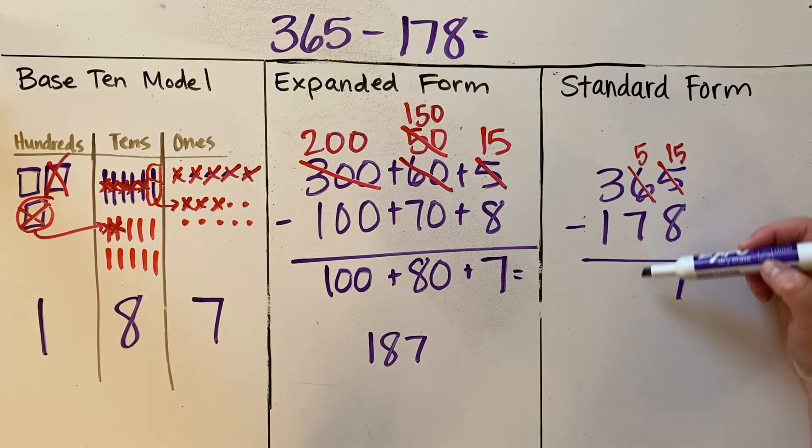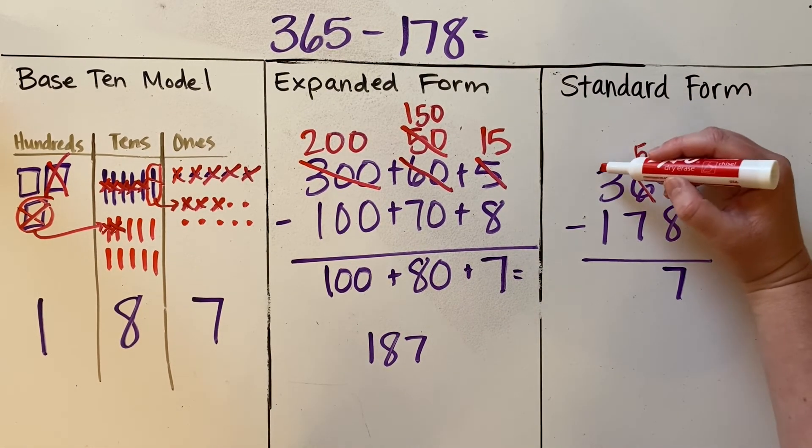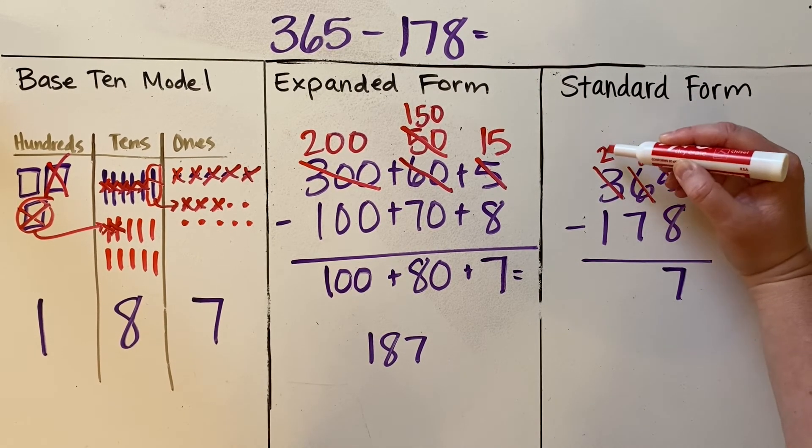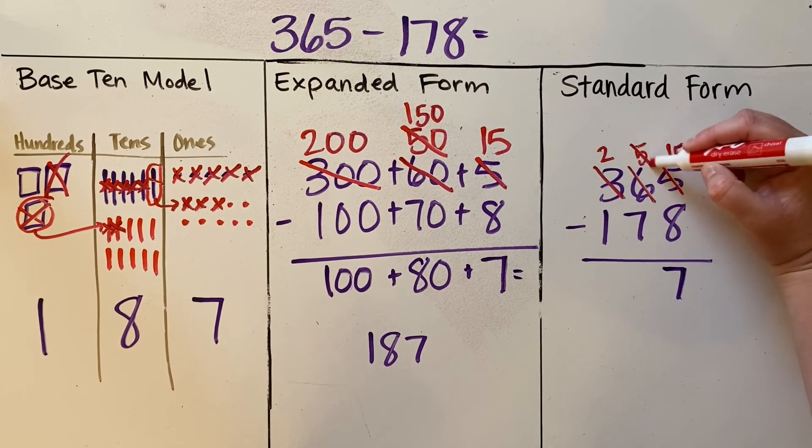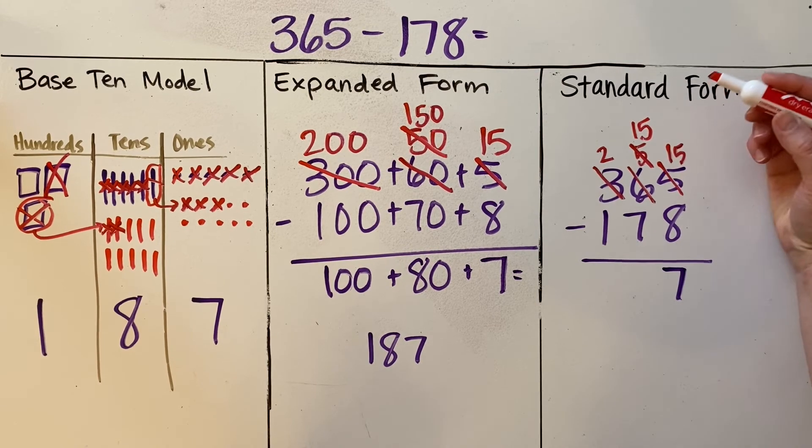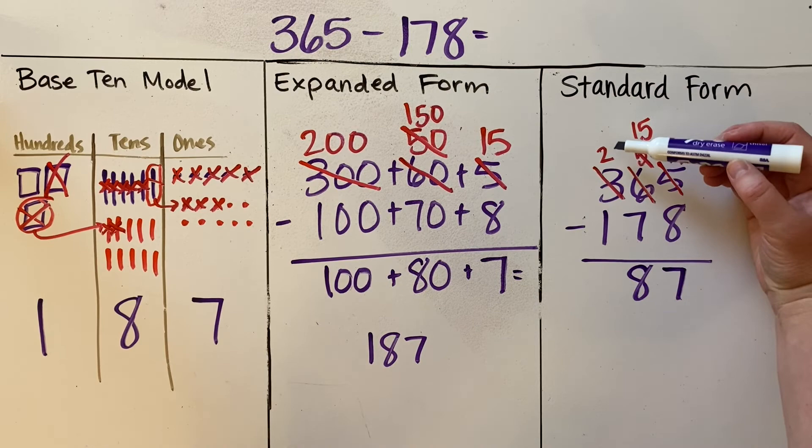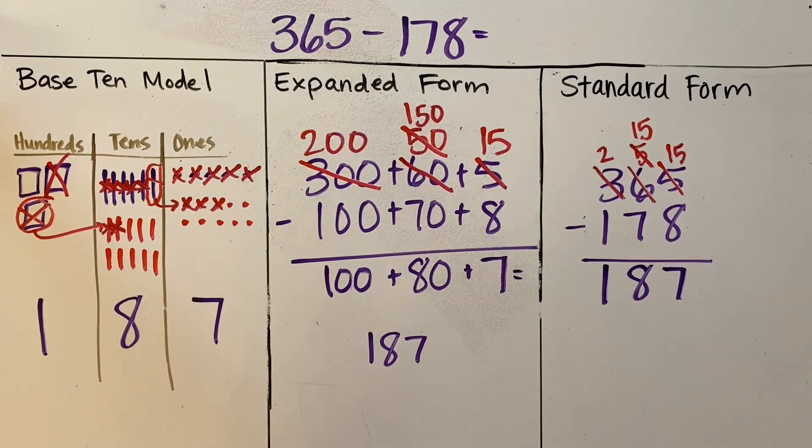Then I look into the tens column, and I'm doing five minus seven. But again, I can't do it, so I need to decompose 100. Instead of 300, there will be 200. Taking 100 away, and I'm regrouping it into the tens place. So instead of five tens, I will now have 15 tens. So 15 tens minus 7 tens is 8 tens. And in the hundreds column, 200 minus 100 equals 100. That's 187.